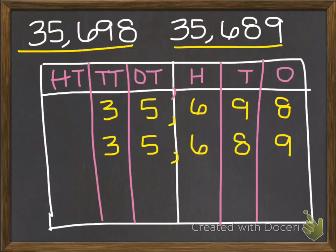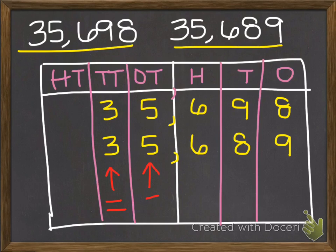Now I can get to work comparing the numbers. I always start with the largest place value when comparing. When I compare the three in the ten thousands and the three in the ten thousands, I know that they are equal, so I move to the next place over. Here, both are fives in the one thousands — those are both equal as well. So I move over to the hundreds place. Again, I have a six in the hundreds in both numbers — those are equal as well.